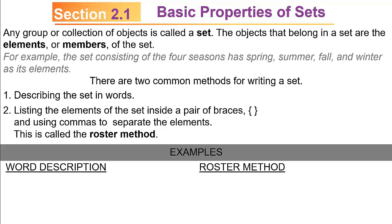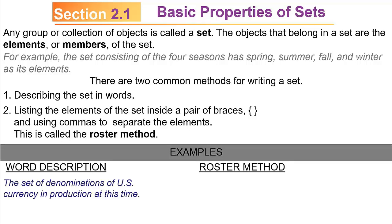For example, consider the word description followed by the roster method for the set of denominations of US currency in production at this time. The word description simply describes the set. In the roster method, you would actually list every bill of US currency currently in production: a $1 bill, a $5 bill, a $10 bill, a $20 bill, a $50 bill, and a $100 bill, written with commas separating them inside a pair of braces.